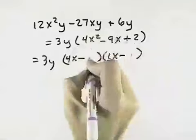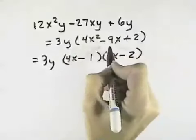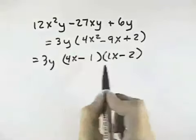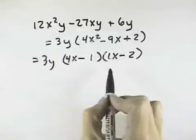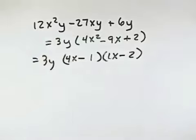But if we switch the 2 with the 1 in the last spaces, we get a negative 1x and a negative 8x, which is negative 9x. So that means that 3y times 4x minus 1 times 1x minus 2 are the correct factors. They can't be broken down any further, and so therefore that would be our completely factored form.